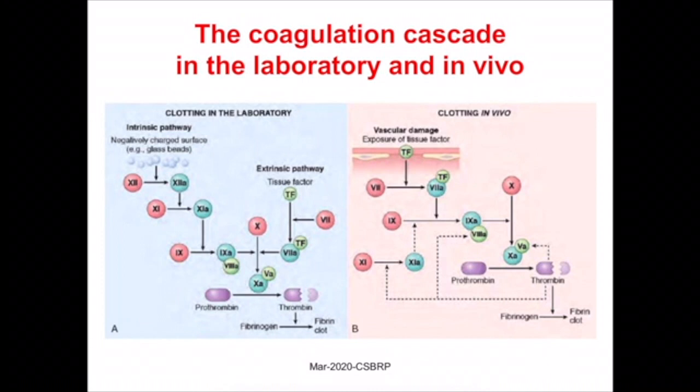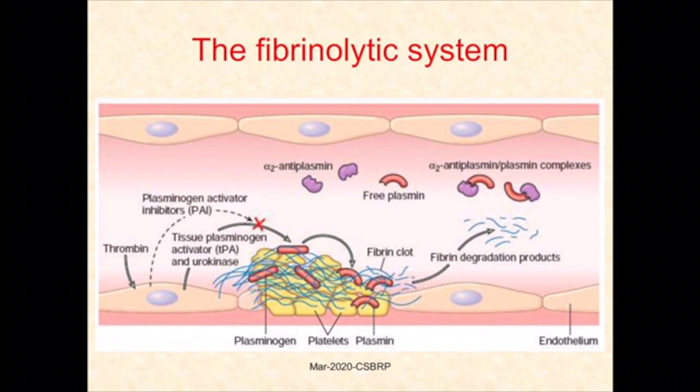Activation of factor 9 can be done by activated factor 7, which is 10 times more potent than the intrinsic limb. When a hemophilia A patient develops antibodies to exogenous factor 8 concentrate, bleeding can be stopped by giving excess factor 7, which bypasses factor 8 by directly activating factor 9. Once the secondary hemostatic plug is formed, further progression of clot is stopped by activation of the fibrinolytic system through tissue plasminogen activator and urokinase.